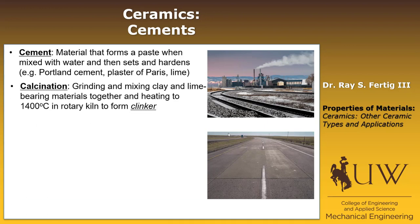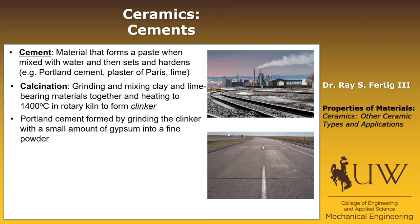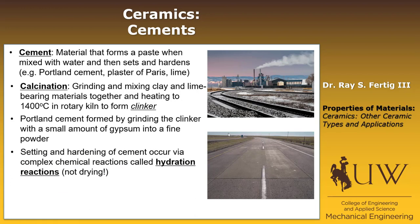The first step in producing Portland cement is calcination — grinding and mixing clay and lime-bearing materials together and heating to 400°C in a rotary kiln, forming something called a clinker. Portland cement is then made by grinding that clinker with a small amount of gypsum into a fine powder; the gypsum retards the reaction that will occur when water is added. The setting and hardening occurs via a complex set of chemical reactions called hydration reactions — not simply drying, but water chemically reacting with the cement to form concrete.